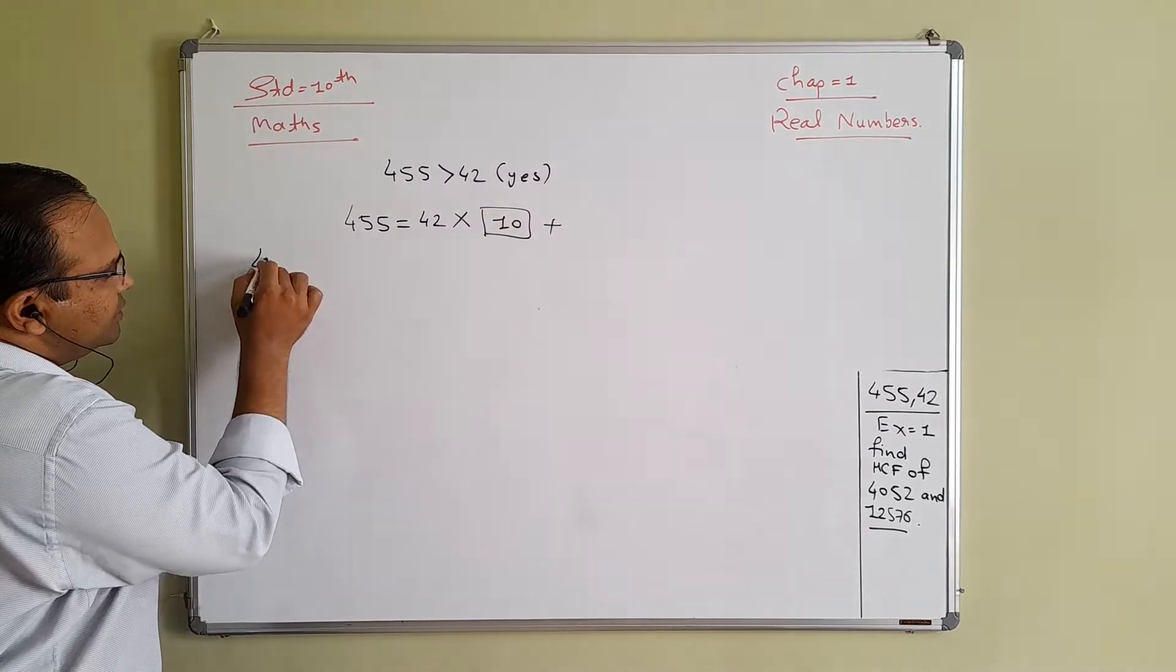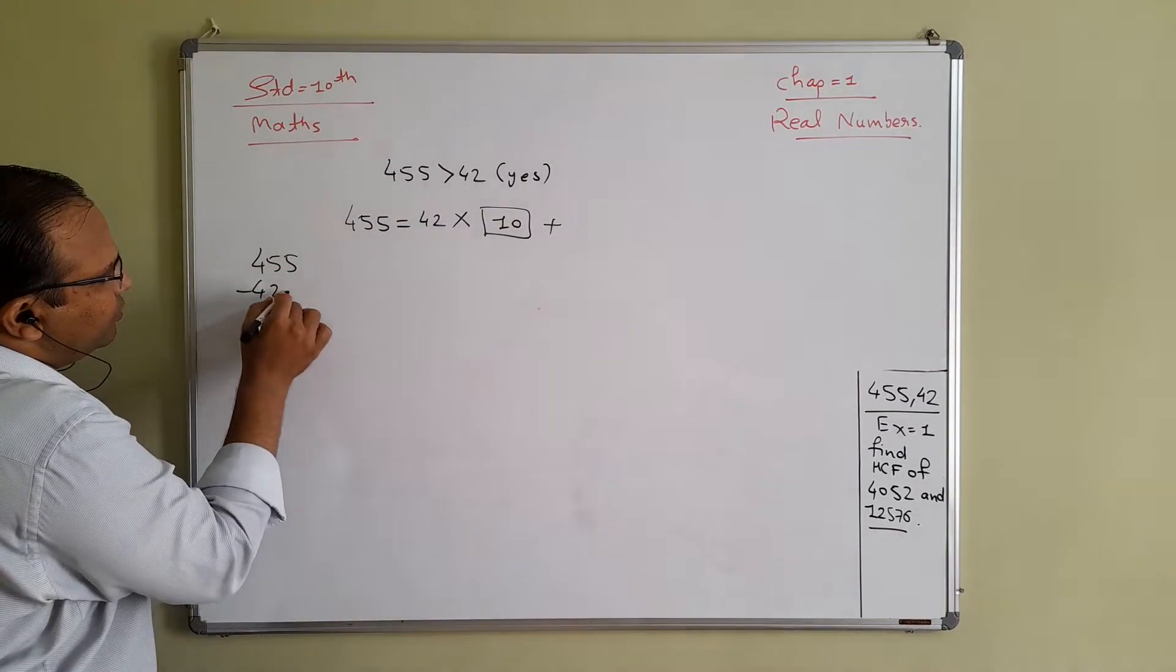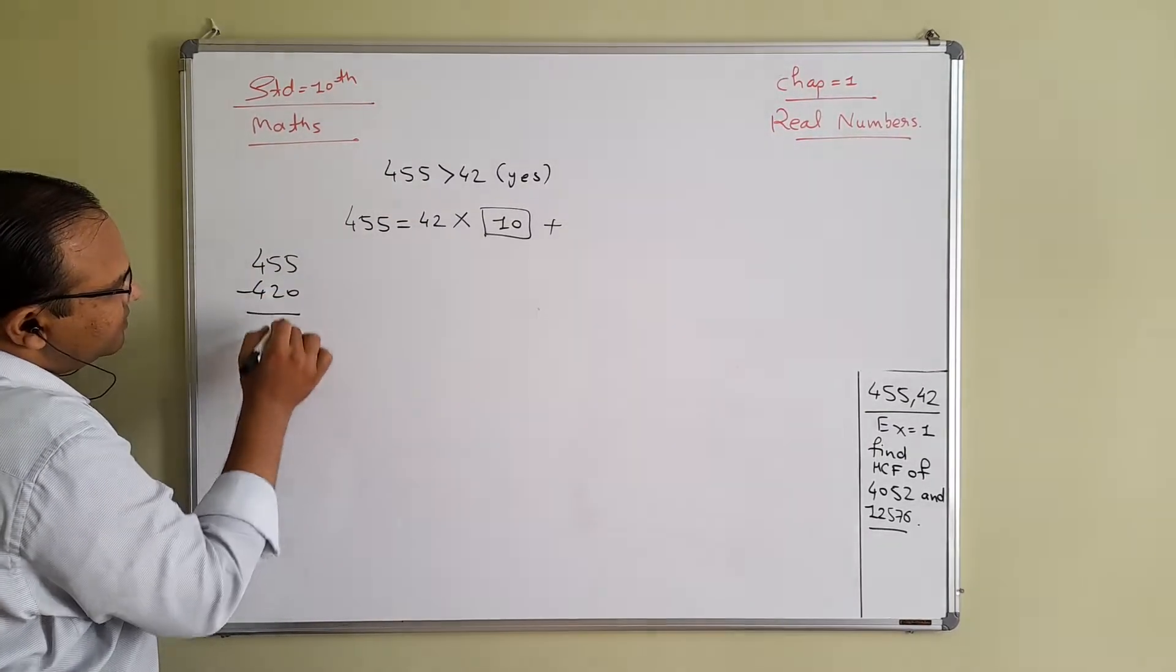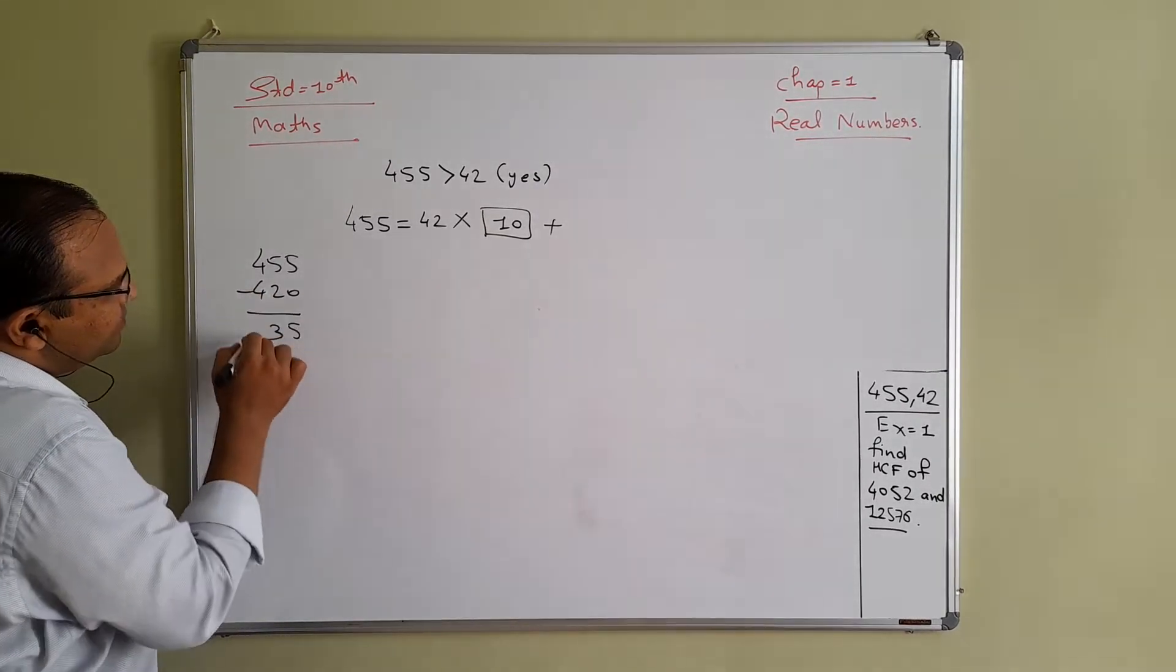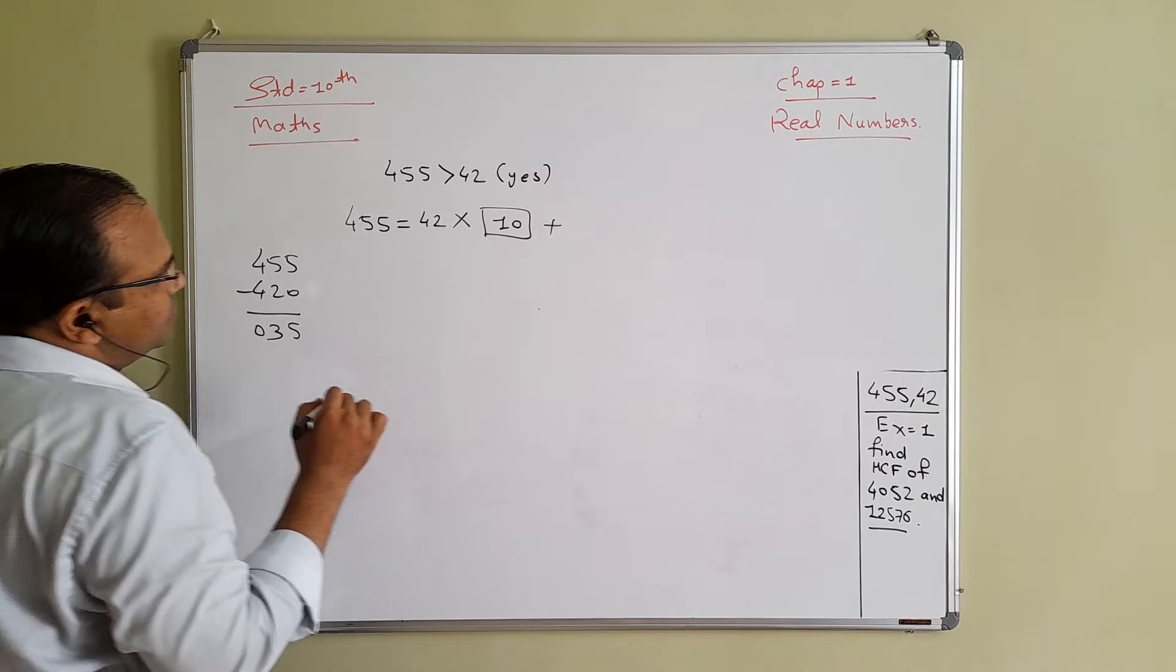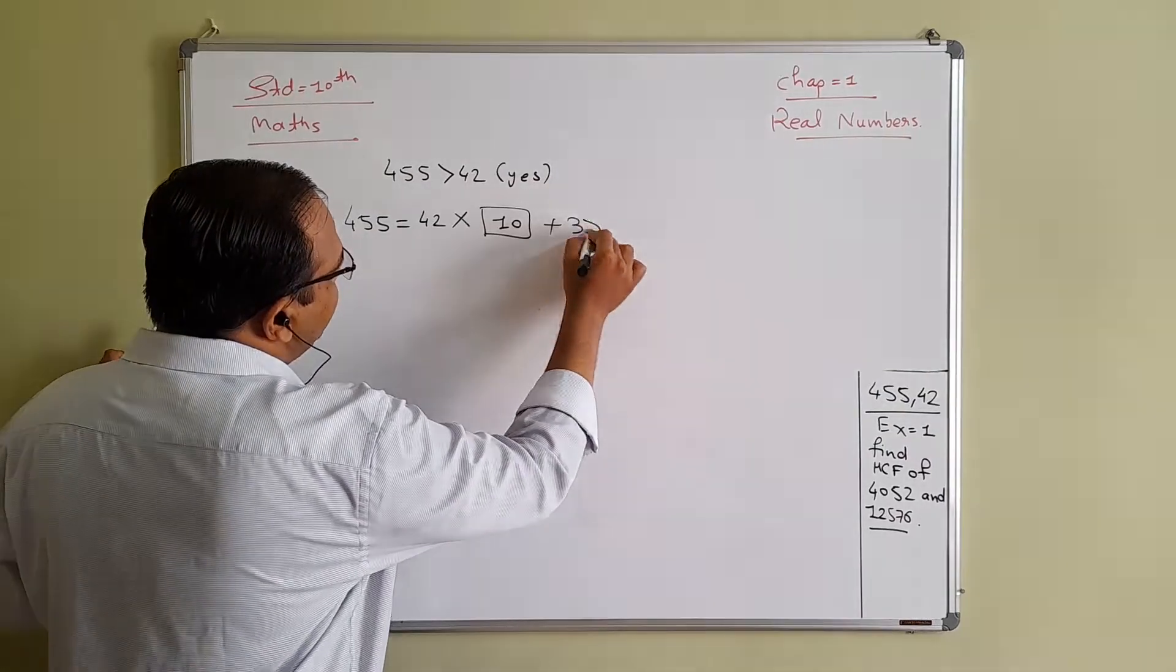So you have to do the subtraction 455 minus 420. What will you get as answer? 5 minus 0 that is 5, 5 minus 2 that is 3, 0. So you are getting 35 as answer.